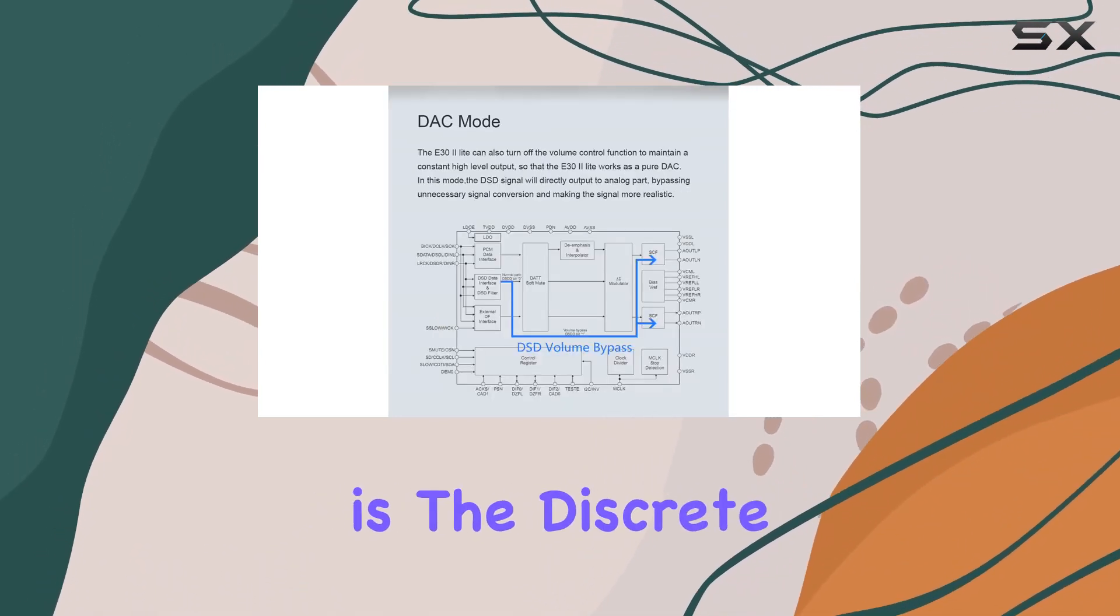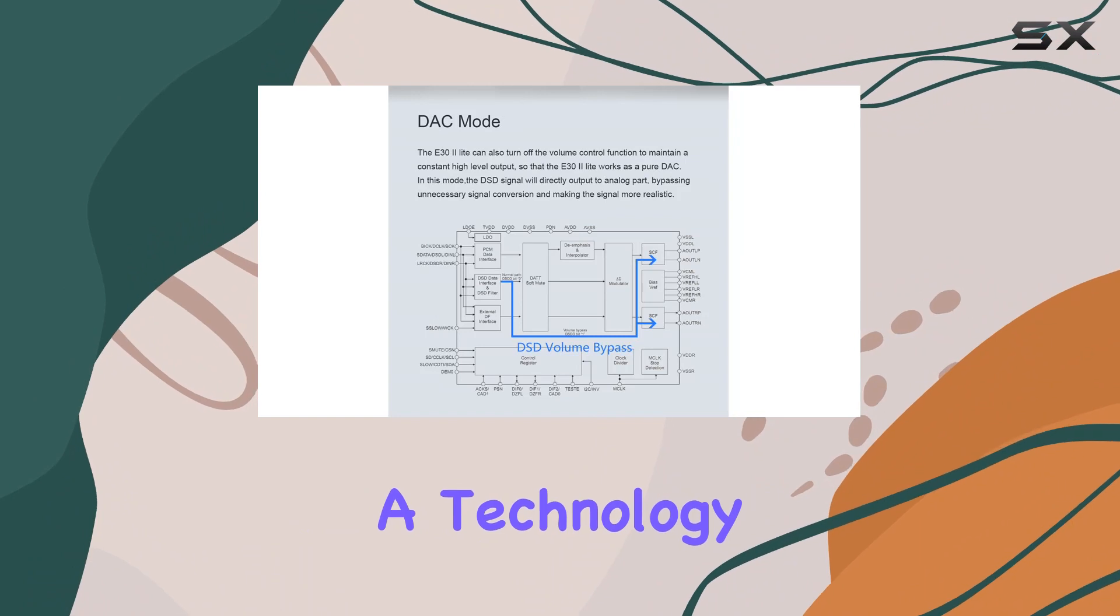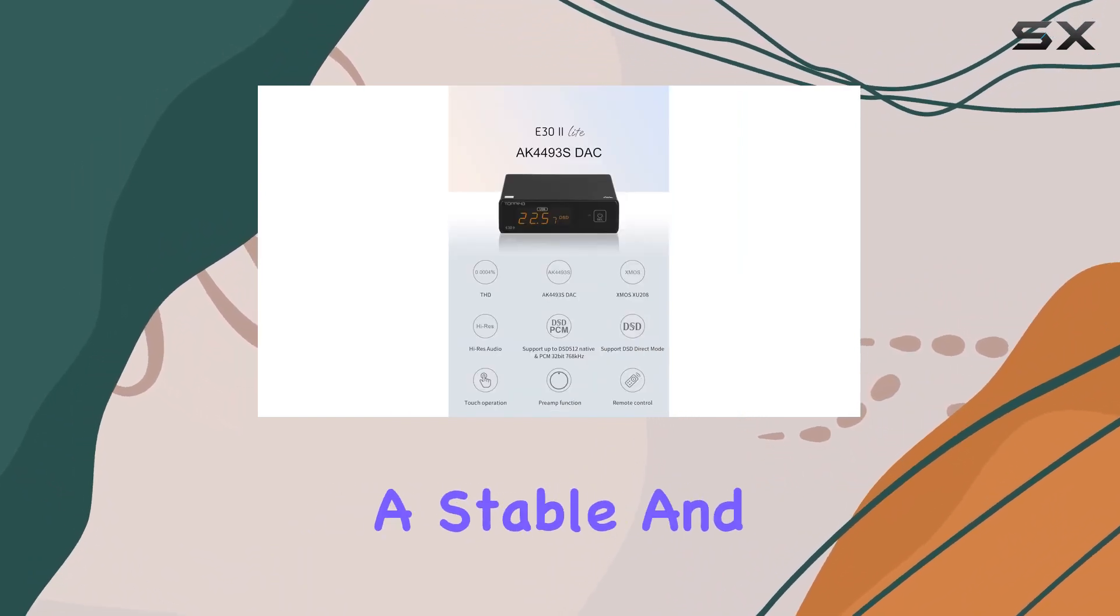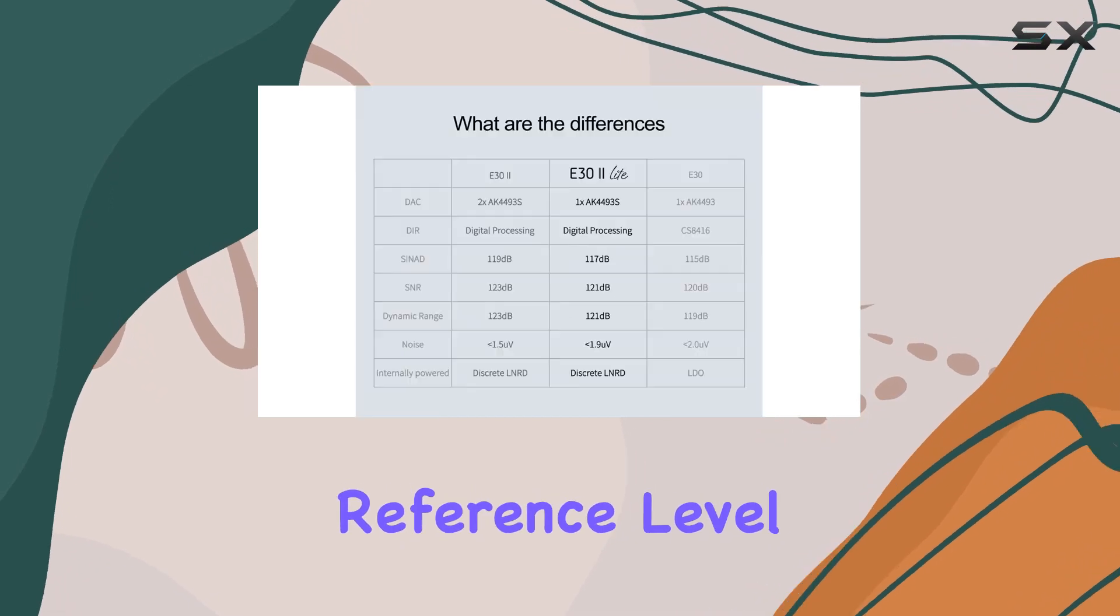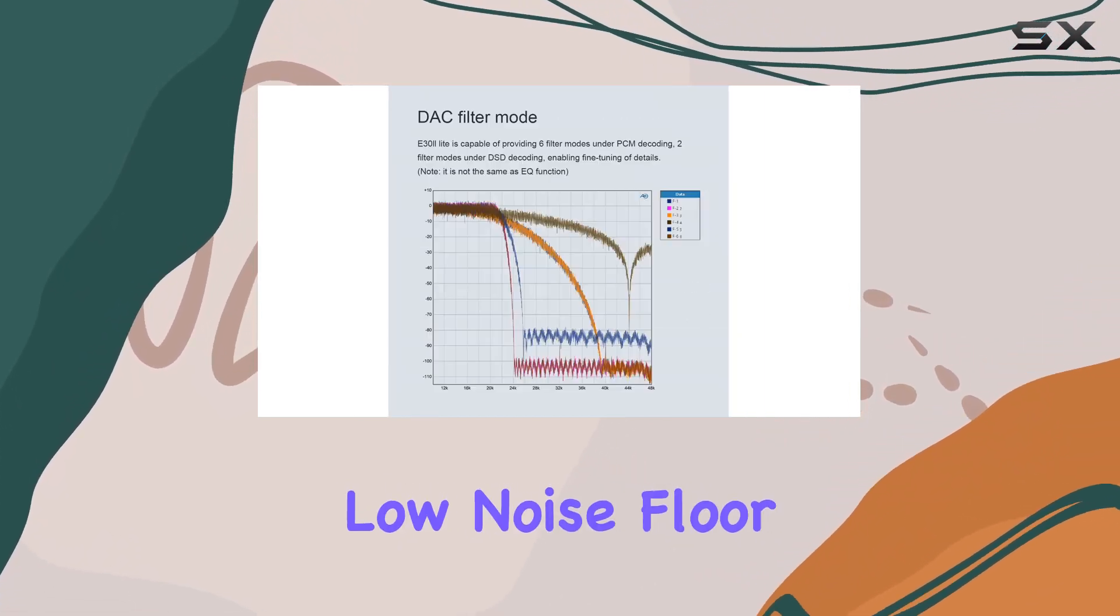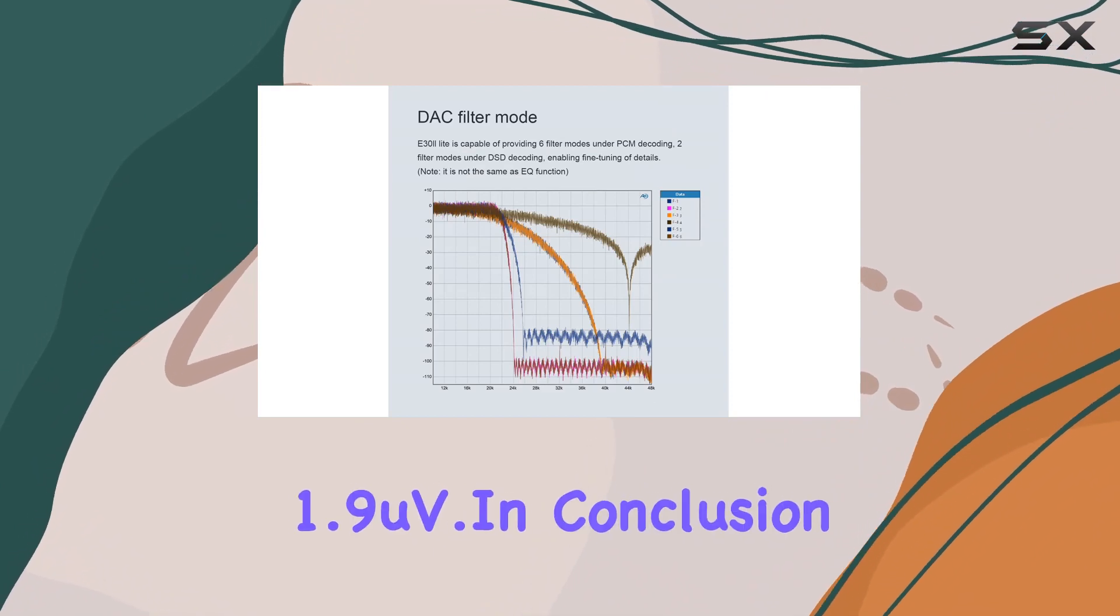One standout feature is the discrete LNRD circuit, a technology that filters out noise from various 5V power inputs, providing a stable and ultra-low noise reference level power supply. This innovation results in an astonishingly low noise floor of less than 1.9 microvolts.